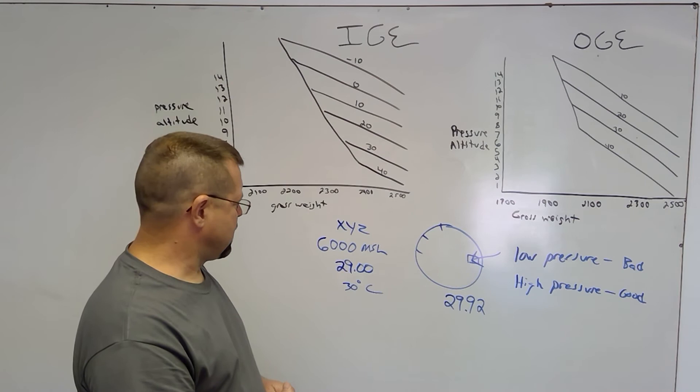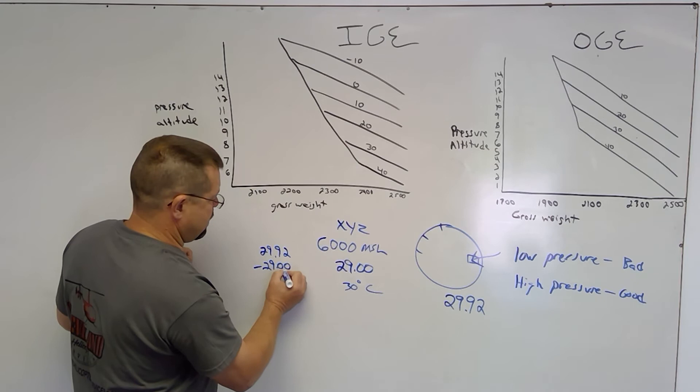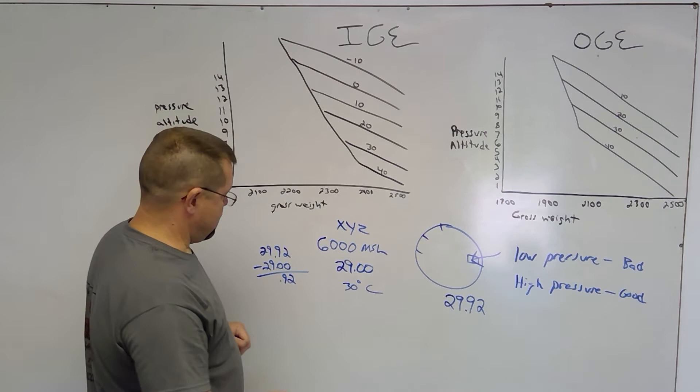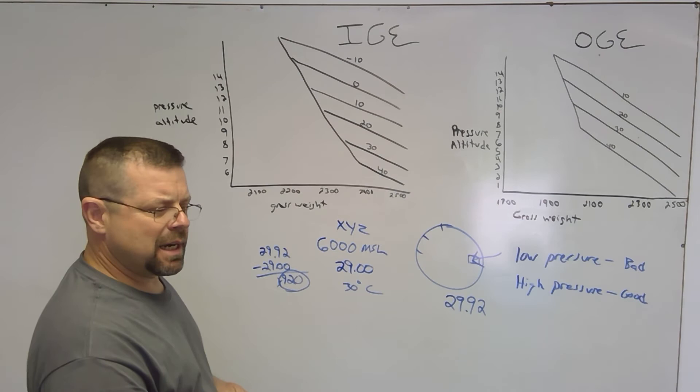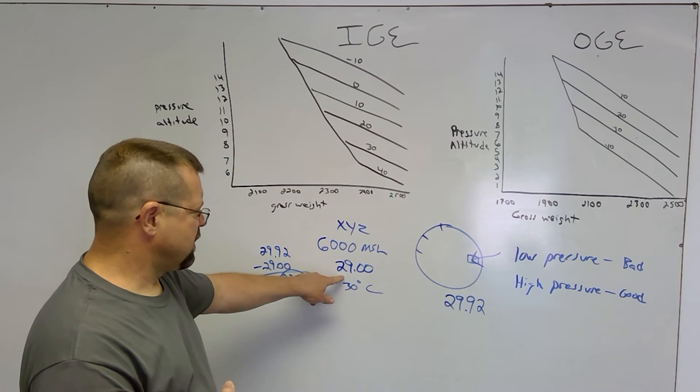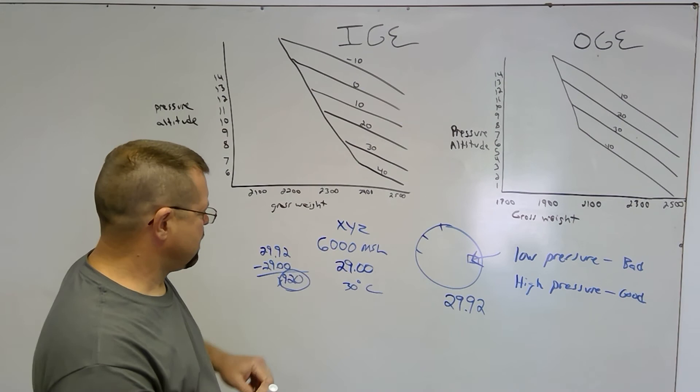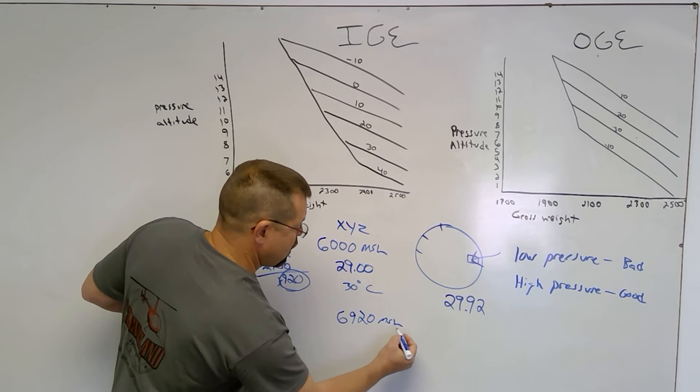Given this information, we first have to figure pressure altitude. So we'll take 29.92 minus 29.00, we have 0.92. Drop the decimal and add a zero: 920 is the number that we'll be working with. So then we need to know what to do with that 920. Do we add it or subtract it from 6,000? This is where you have to look and see, are we talking about low pressure or high pressure? We're talking about low pressure, so the helicopter will think it is operating at 6,920 MSL. That's our pressure altitude.